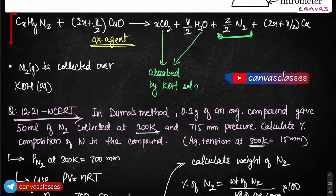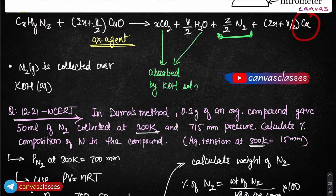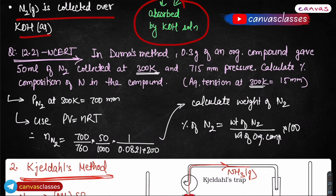So the equation to remember is: CₓHᵧNz + (2x + y/2) CuO → xCO₂ + (y/2)H₂O + (z/2)N₂. Copper oxide acts as the oxidizing agent here — it oxidizes nitrogen to N₂ and is itself reduced to copper. The CO₂ and H₂O are absorbed by the KOH solution, and N₂ is collected over aqueous KOH. Now let us look at a nice NCERT question on this.